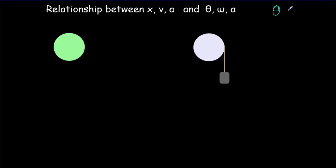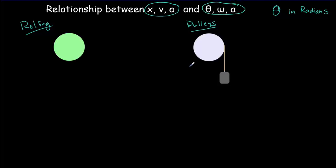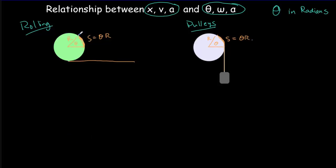If we put angular displacements theta into radians, we get some really simple relationships — that's why we like to use them. In the cases of rolling and pulleys, there's a simple relationship between linear and angular quantities. For a ball rolling on a surface through an angle theta with radius r, the arc length is given by theta times r by the definition of the radian. Similarly for a pulley rotating through angle theta with radius r, the arc length is theta r.